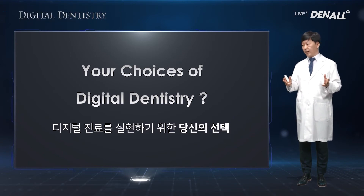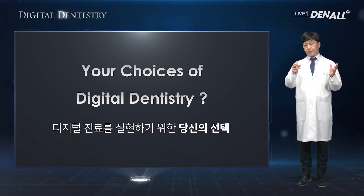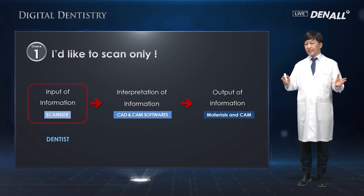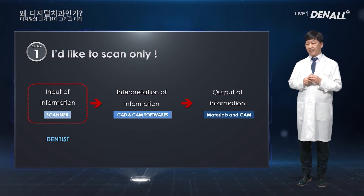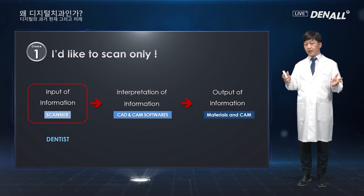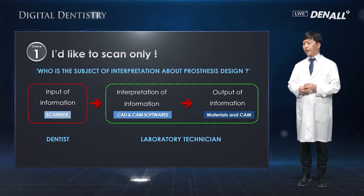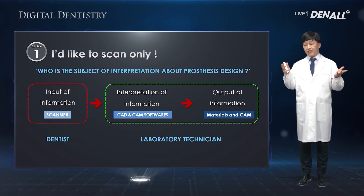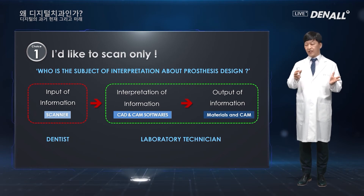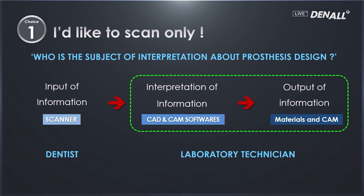So what is your choice to realize digital dentistry? You can choose multiple methods to equip your dental clinic with digital equipment. First, if you're not confident about designing and just want to do scanning, you can just buy a scanner. In this case, scanning is done by the dentist, while interpretation and printing of prosthesis is handled by the lab. The lab takes the lead in interpretation of data — this is a very similar workflow to that of analog.